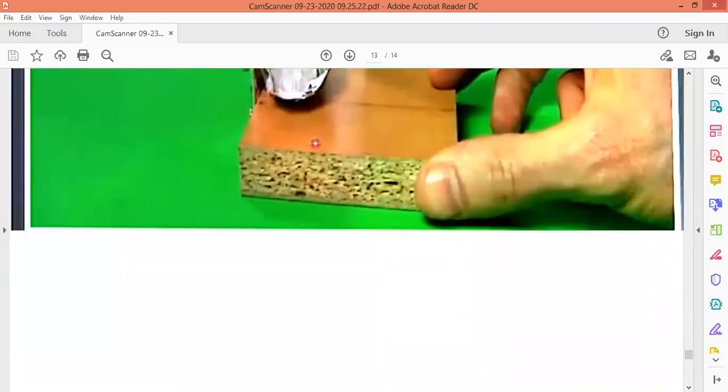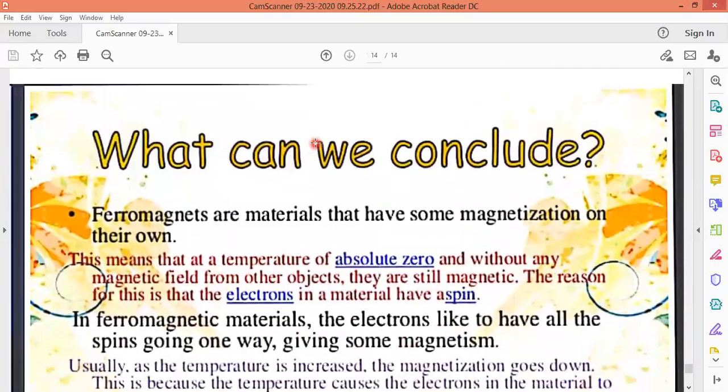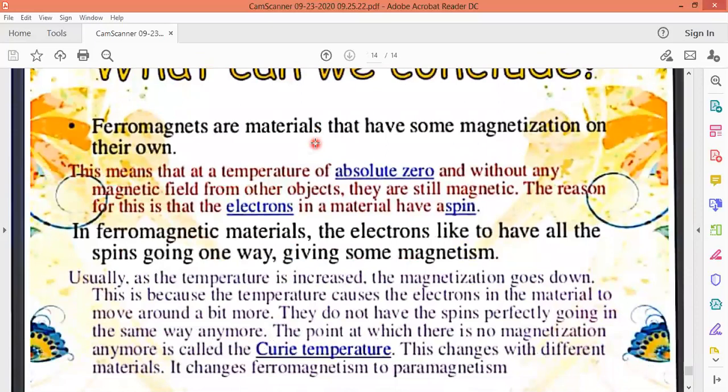How a ferromagnetic material behaves. What we conclude: ferromagnetic materials have some magnetization on their own. This means that at a temperature of absolute zero and without any magnetic field from any object, they are still magnets. The reason is that the electrons in the material have spin. In a ferromagnetic material, the electrons like to have all these spins going one way, giving some magnetism.